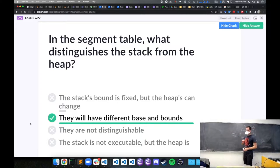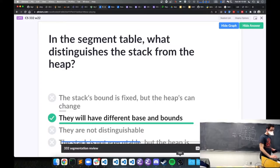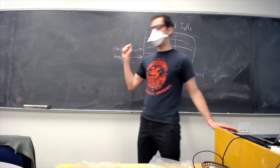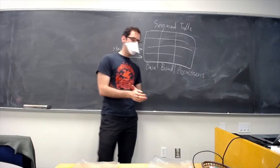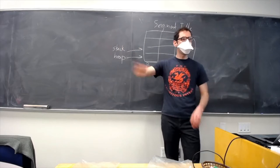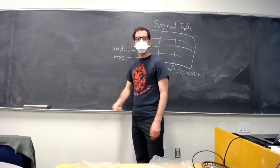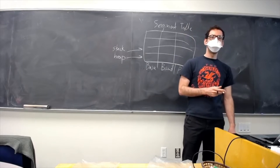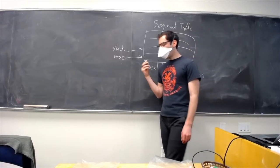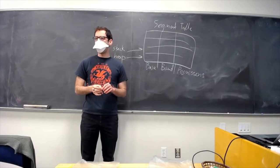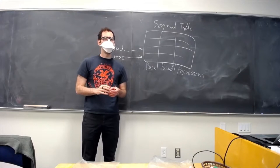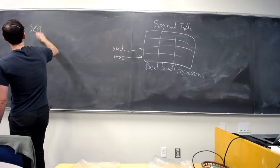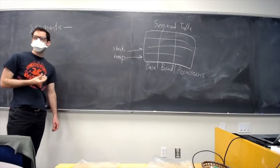At the end of last time we talked about segments and discussed some pros and cons. They had some definite benefits over regular base and bounds, but there were some significant downsides. Anyone remember a downside? Memory management became more complex. Why was it more complex? It had to do with resizing — segments are variable size, not fixed size.